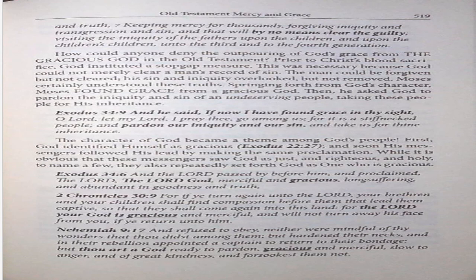Prior to Christ's blood sacrifice, God instituted a stopgap measure. This was necessary because God could not merely clear a man's record of sin. The man could be forgiven but not cleared. His sin and iniquity overlooked but not removed. Moses certainly understood these truths. Springing forth from God's character, Moses found grace from a gracious God. Then he asked God to pardon the iniquity and sin of an undeserving people, taking these people for his inheritance. Exodus 34:9. And he said, If now I have found grace in thy sight, O Lord, let my Lord, I pray thee, go among us, for it is a stiff-necked people, and pardon our iniquity and our sin, and take us for thine inheritance.